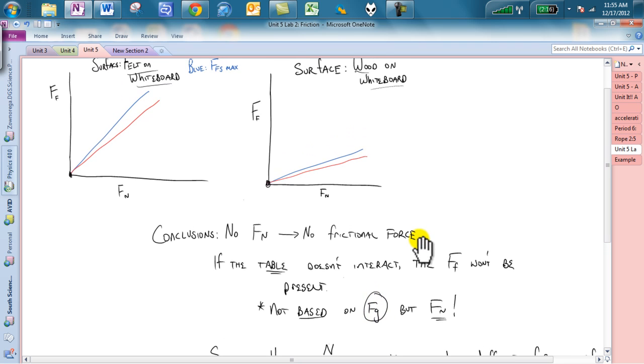And I want to emphasize this fact, it is not based on Fg. You will notice that the normal force controls the frictional force. Why? Because the normal force is what the table is exerting, and it is not based upon the mass nor the Fg. So, focus in on that normal force.